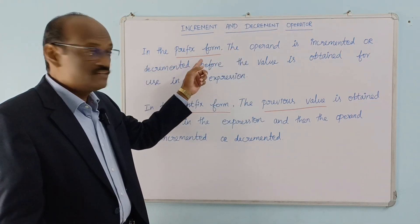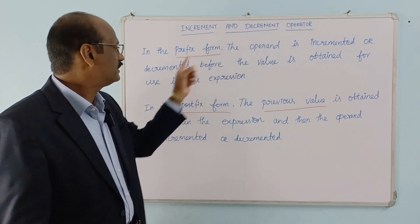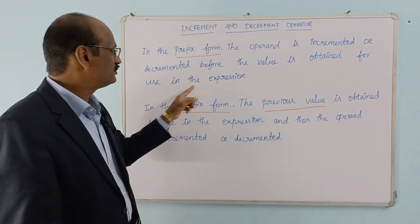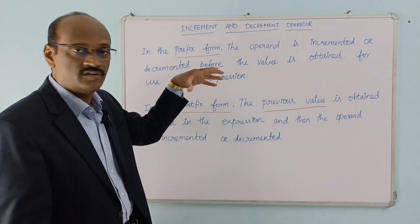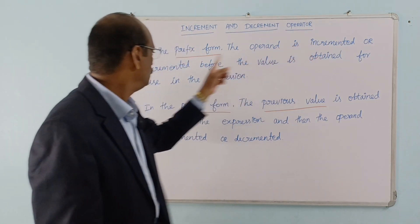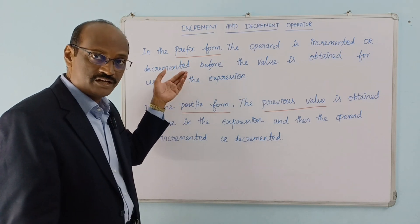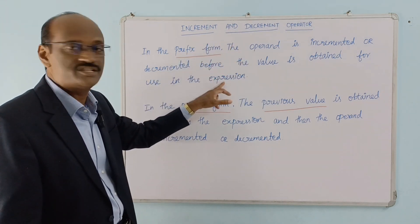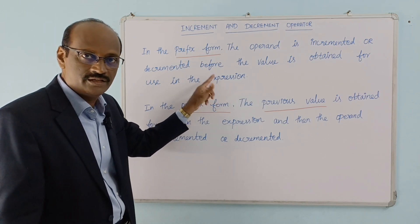In the prefix form, the operand is incremented or decremented before the value is obtained for use in the expression. In prefix form, the increment or decrement operation happens first, and then the new value is used in the expression.